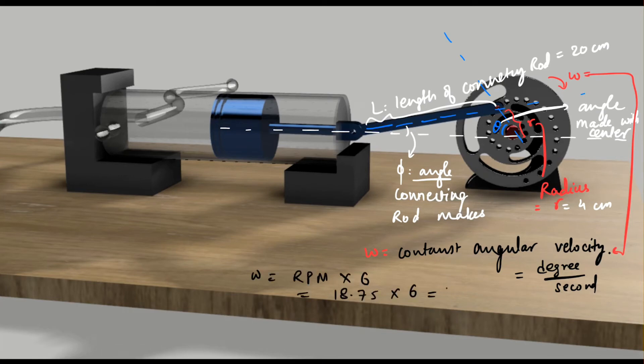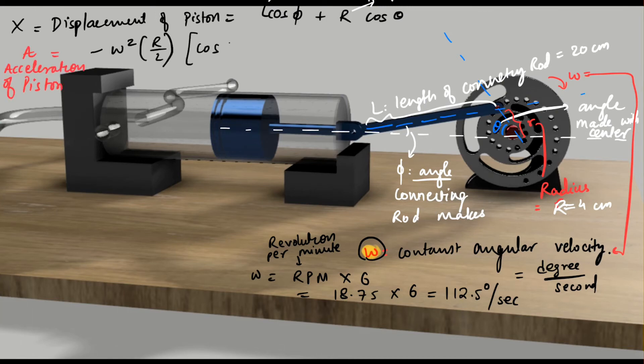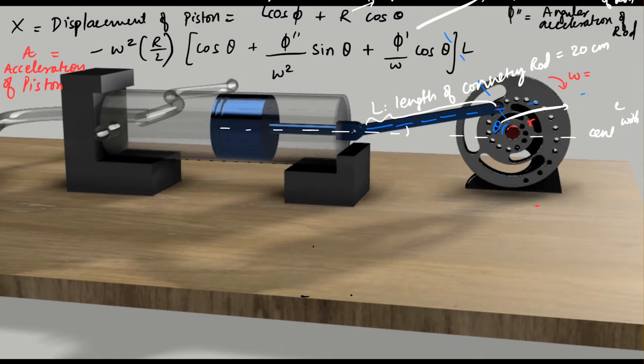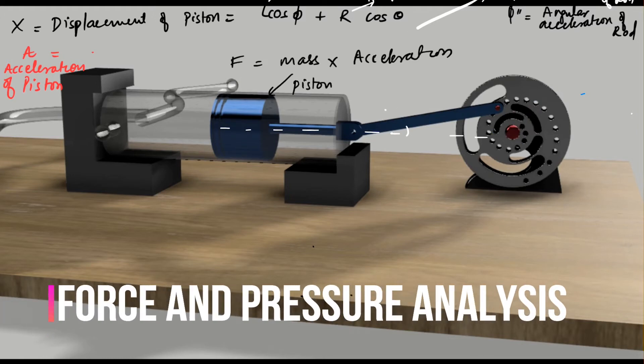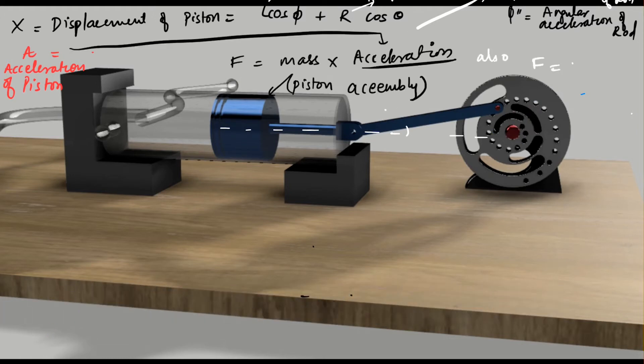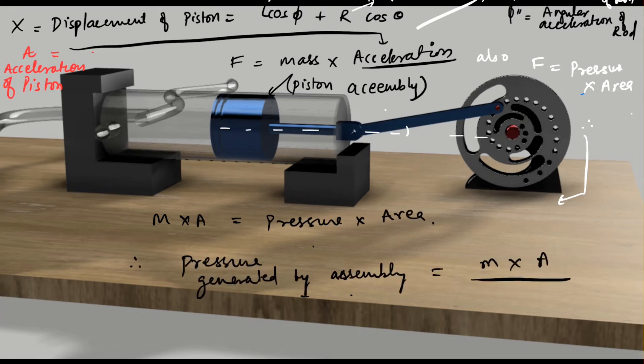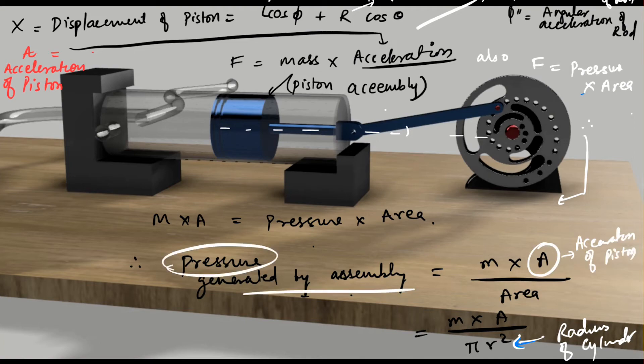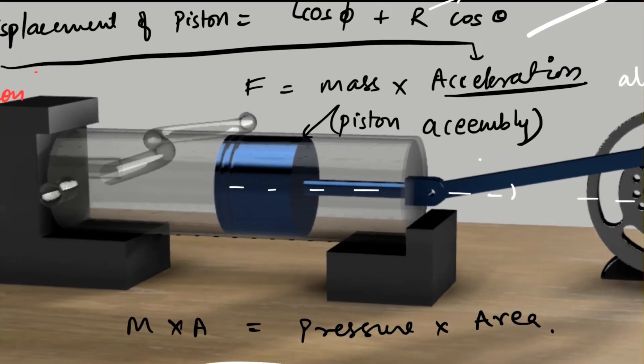L will be the length of the connecting rod, which is 20 centimeters in this design. Omega would be the angular velocity of the wheel, which is calculated by multiplying rotation per minute by 6. Its unit will be in degrees per second. In our case, RPM times 6 will be coming around 112 degrees per second. I have put down the formula for the displacement of the piston at any given theta. Acceleration of the piston is also calculated by this complicated formula. Once we have the acceleration, we can calculate the force, which will be equal to mass times acceleration. We already know the formula for pressure, which is force upon area. Thus we can calculate the pressure inside the air cylinder.